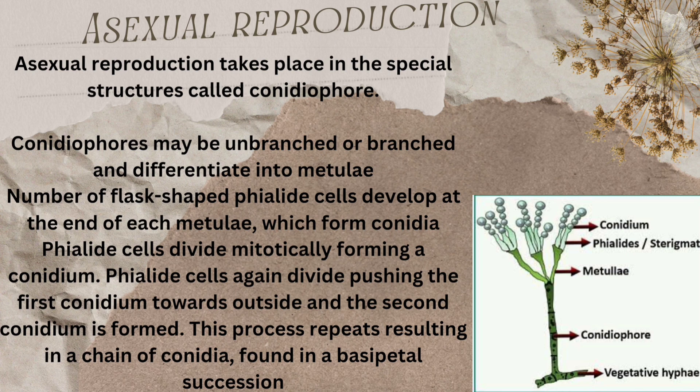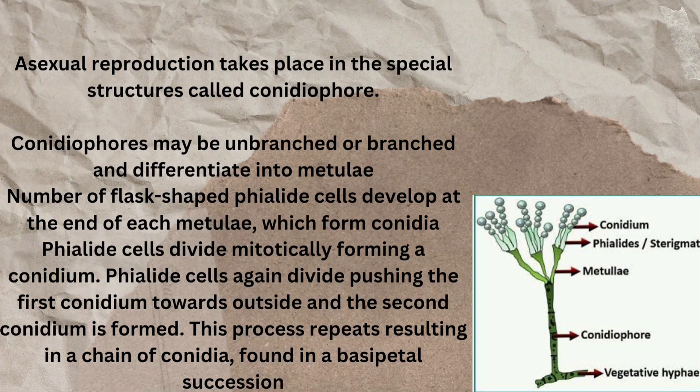The older conidia are at the top and the younger ones develop at the base — this process is called the basipetal manner. The younger conidia push the older ones upward and outward, forming a chain. The conidia appear bluish, green and yellow in color, and are round to oval in shape.